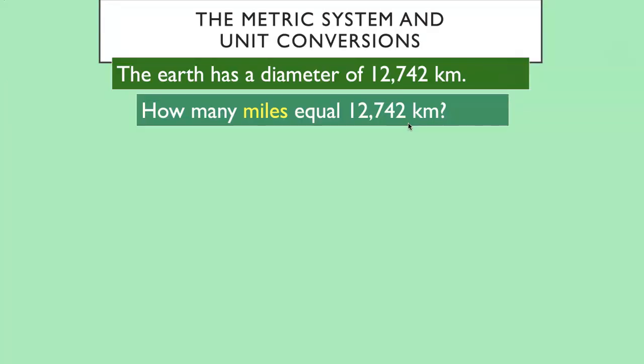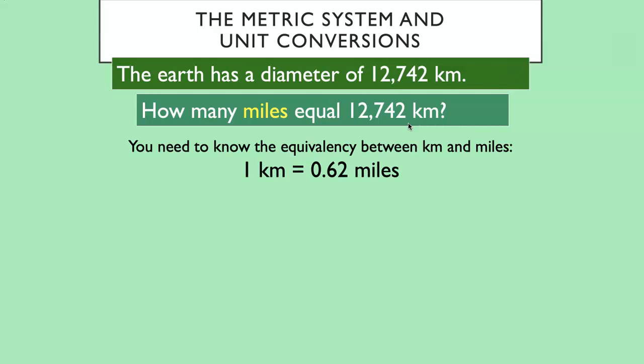Okay. Finally, a little bit about conversions between the metric system and other units. For example, the Earth has a diameter of 12,742 kilometers. How many miles is that? Well, you need a conversion factor. How many miles is a kilometer? Or how many kilometers is a mile? And these are not things I expect you to memorize. I would always give you this information in a table or in a problem. So I could tell you that one kilometer is 0.62 miles. Alternatively, I could tell you that one mile is 1.61 kilometers. They both work. I'm going to show you how to solve it both ways.